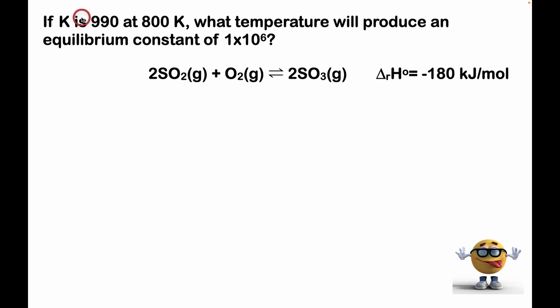So we have data on the equilibrium constants and temperature, so therefore we need to use the Van't Hoff equation, and this is it in its integrated form. I've derived this a number of different ways. You can check that out if you want. The links are in the description.